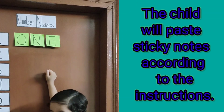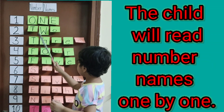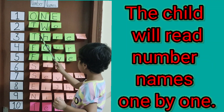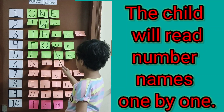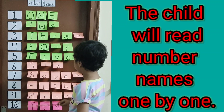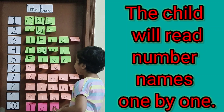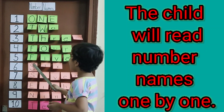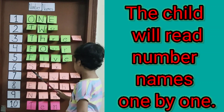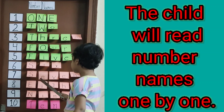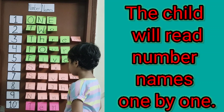So how do we write in alphabetical order? T-W-O. Two. T-H-R-E-E. Three. F-O-U-R. Four. F-I-V-E. Five. S-I-X. Six. S-E-V-E-N. Seven.